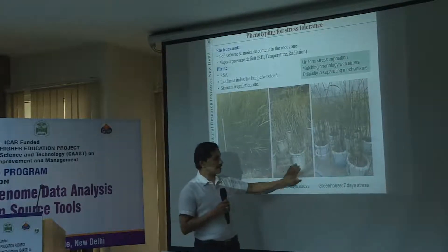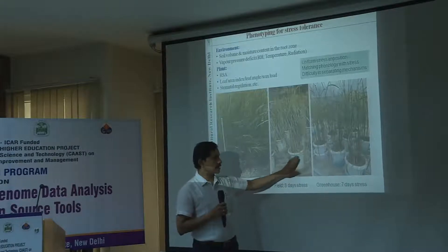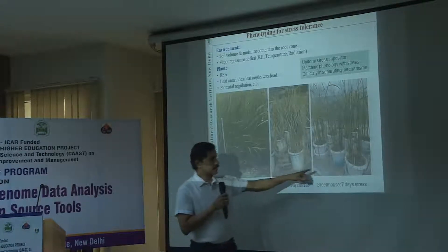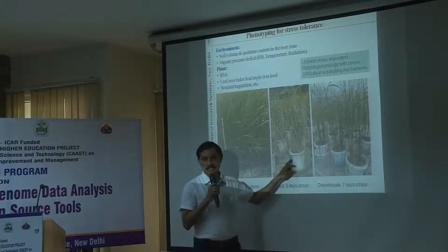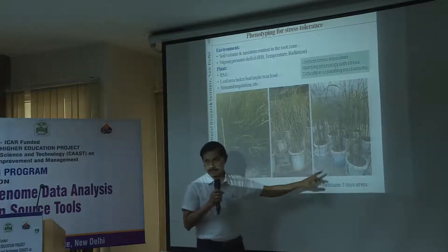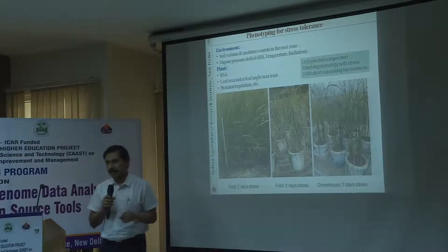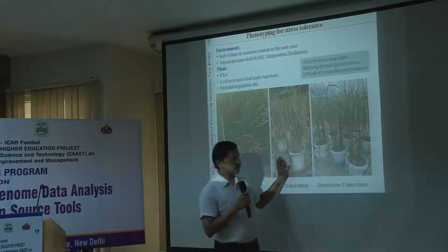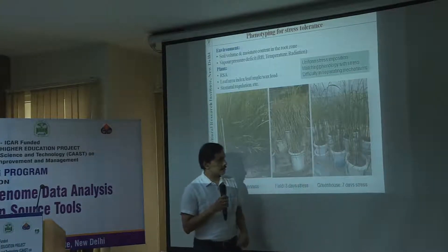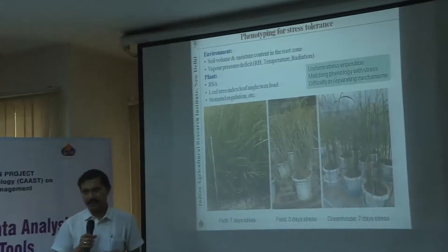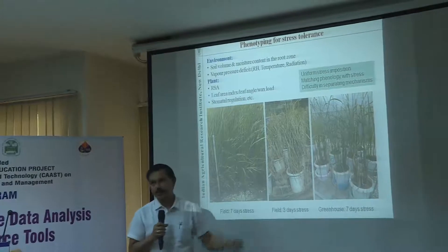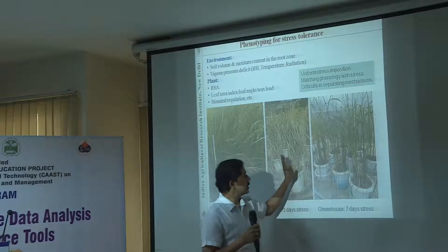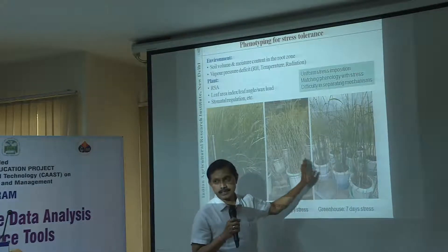In the pot, that opportunity is not there. Whatever water is in the pot is used by the plant, and after that it is dry. The difference between the net house and greenhouse is that plants in the net house are under open conditions while greenhouse plants are under closed conditions. If you have been in a greenhouse, you feel more humid — humidity is high inside, less outside. One key difference is the vapor pressure deficit: the air is drier outside compared to inside the greenhouse, which increases the rate of transpiration.